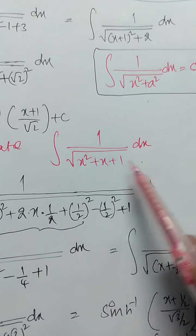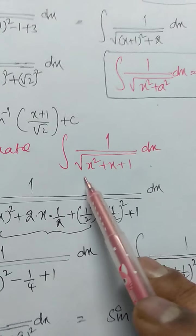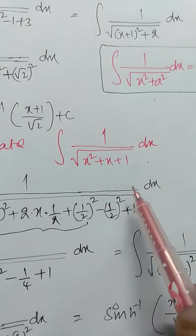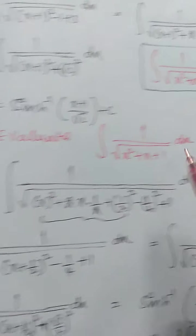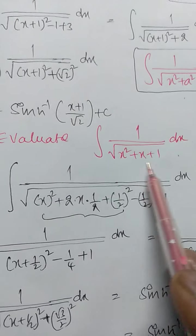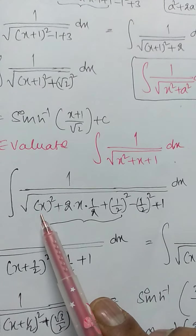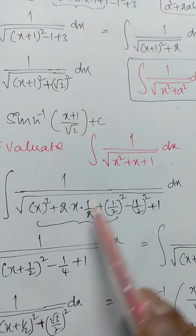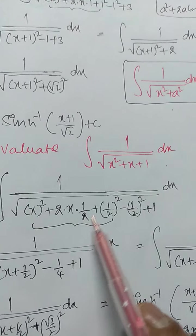Evaluate integration of 1 by root of x squared plus x plus 1, dx. It is also in the form of integration of 1 by root of ax squared plus bx plus c, dx. We have to convert the denominator into sum of squares. Now x squared plus x can be written as a squared plus 2ab, that is x whole square plus 2 into x into 1 by 2 — by cancellation of 2 we get x — so x can be written as 2 into x into 1 by 2. Here b value is 1 by 2.